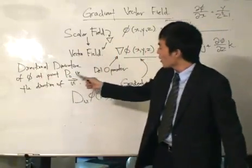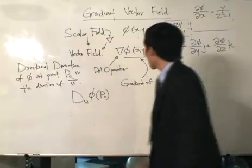The directional derivative of phi at point naught in the direction of u. What does that mean?